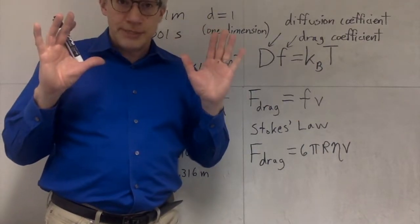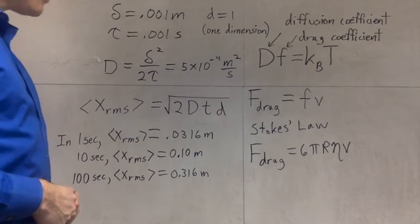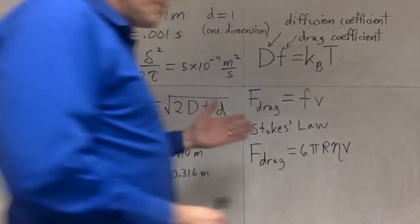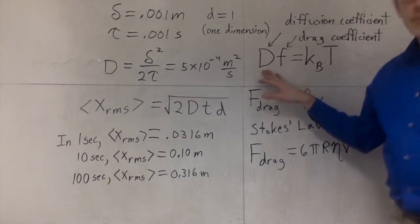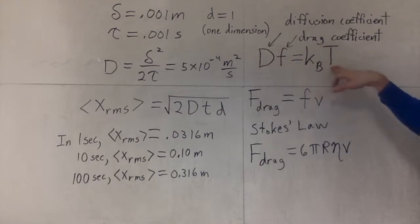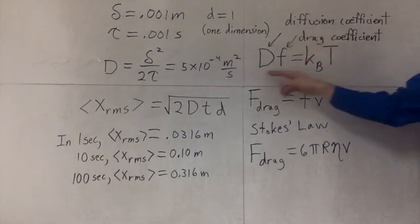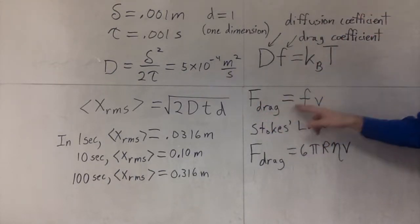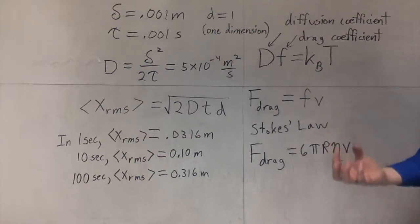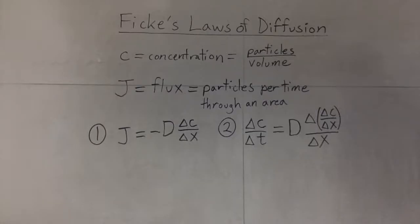A more accurate model uses this equation by Einstein that relates the diffusion coefficient and the drag coefficient to Boltzmann's constant and the absolute temperature in Kelvins. Diffusion coefficient is this thing. If you have a drag force that is proportional to the velocity, then F is the drag coefficient. In the case of Stokes' law, when a sphere is moving slowly through a fluid, we get 6 pi times the radius times the viscosity times the velocity is the amount of the drag force.